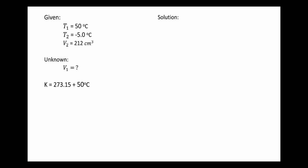Convert Celsius to Kelvin. For T1, 273.15 plus 50 is equal to 323.15 Kelvin. For T2, because it is negative, we subtract: 273.15 plus negative 5 is 268.15 Kelvin.